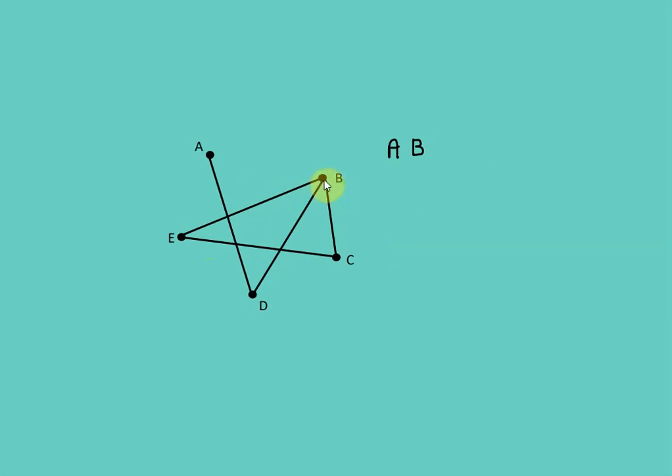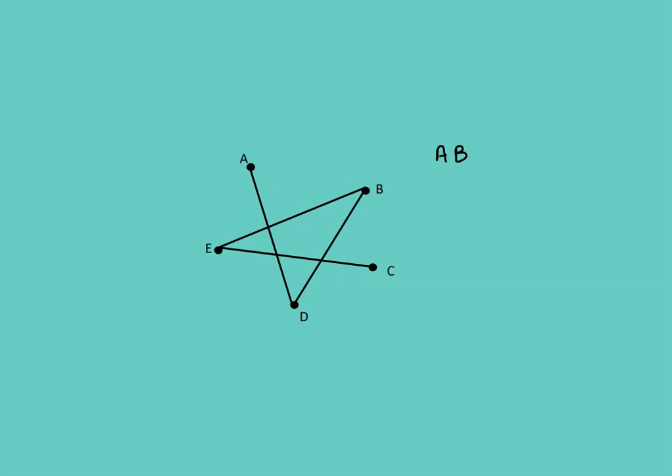So we can choose to remove the edge going from B to E or from B to C. Let's go from B to C. So we've removed that edge and now we're going to add C to our circuit.